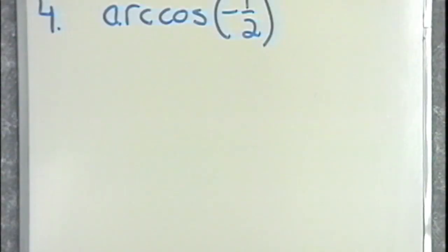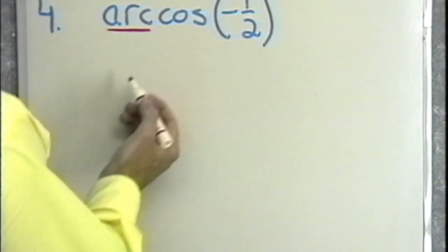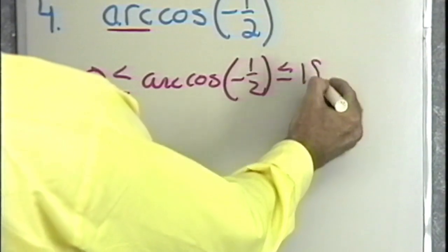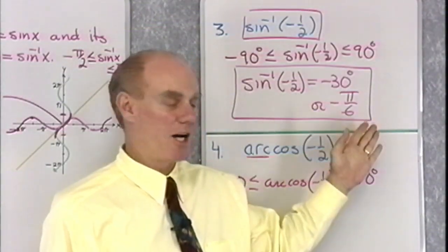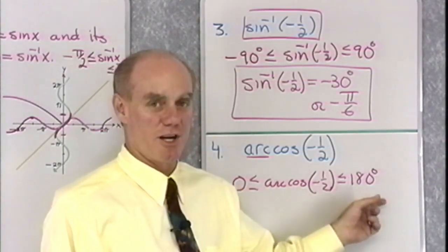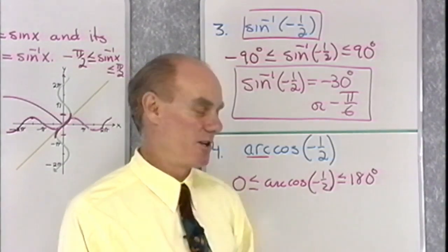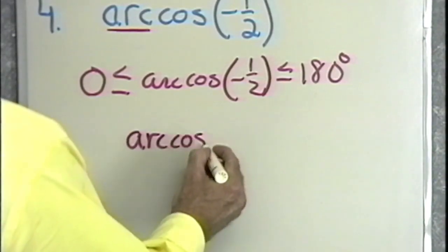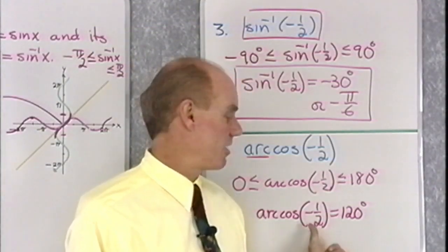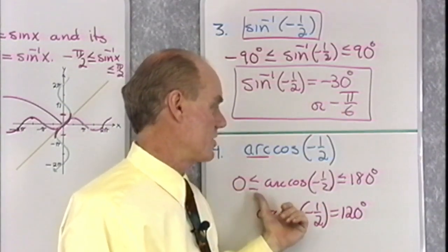Here's another problem: we want the arc cosine of negative 1 half. Arc cosine and inverse cosine mean the same thing. The restrictions on inverse cosine are 0 less than or equal to arc cosine of negative 1 half less than or equal to 180 degrees. So whereas inverse sine is restricted to negative 90 to positive 90, inverse cosine is restricted to 0 to 180. It must be in quadrant 2. The reference angle is 60 degrees, and the angle in quadrant 2 that has a cosine of negative 1 half must be 120 degrees. The arc cosine of negative 1 half is 120 degrees — punch in negative 0.5 and press your inverse cosine button, and 120 degrees comes out.